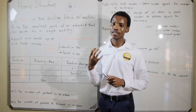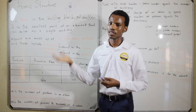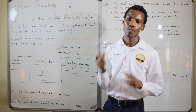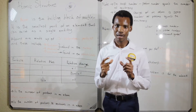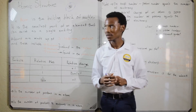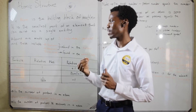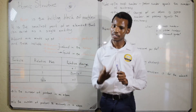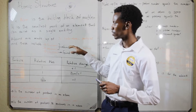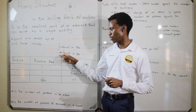So first of all, what is an atom? Well, an atom is the basic building block of matter. It is the smallest part of an element that can exist, and we say that it is made up of three subparticles. These subparticles are the protons, neutrons, and the electrons.